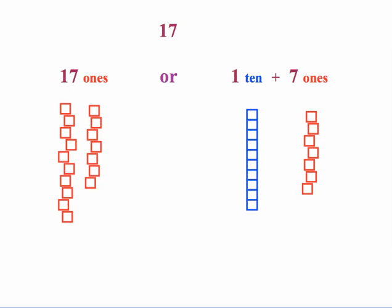So let's take the number 17. Students have to be flexible and see this in 2 different ways. They need to see this as 17 individual ones, but they also have to see it, again critical, that they interpret this also as 1 ten and 7 ones.